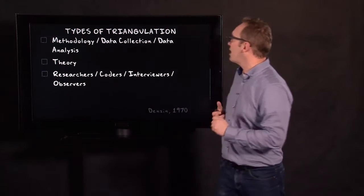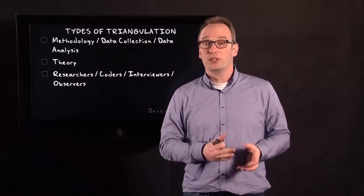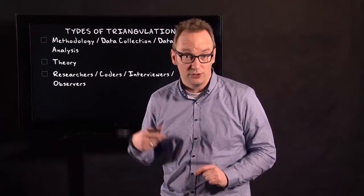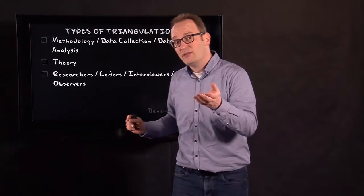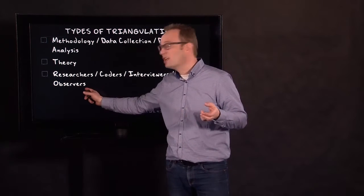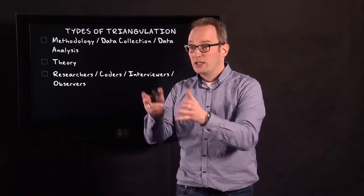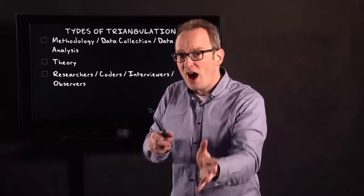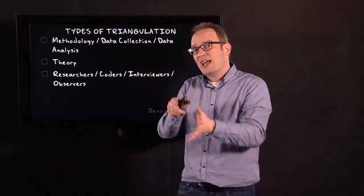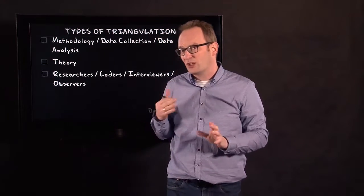The third type of triangulation is the type of triangulation by using different researchers or different interviewers or different coders when you're coding texts. And for us with observation, probably different observers. If you observe someone waiting and you observe this waiting behavior and I observe this same person and the waiting behavior of that same person, then probably we get to a little different interpretations of the situation.